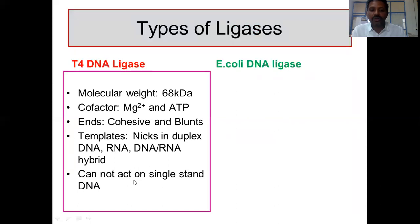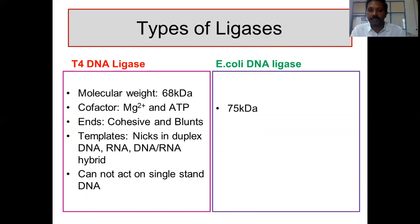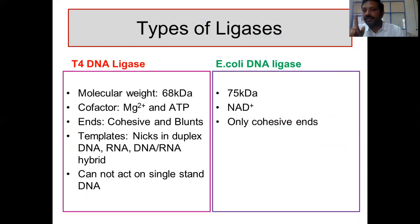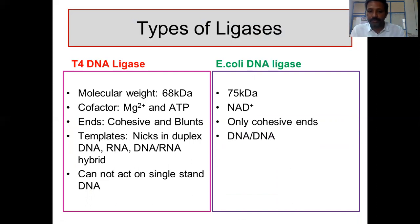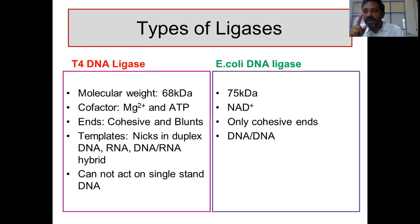T4 DNA ligase cannot act on single-stranded DNA. The E. coli DNA ligase is 75 kDa and requires NAD+ as a cofactor. It can only establish phosphodiester bonds between cohesive ends and acts only on DNA-DNA. In the next lecture we will talk about the ligation mechanism. Thank you all for watching.